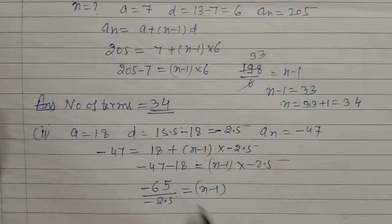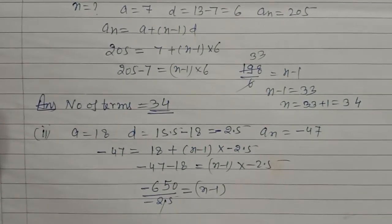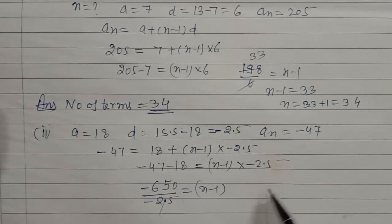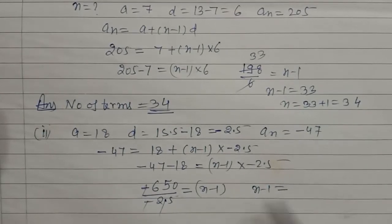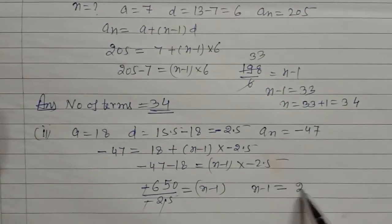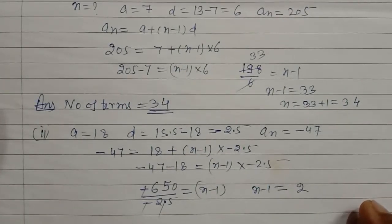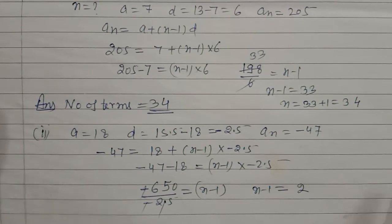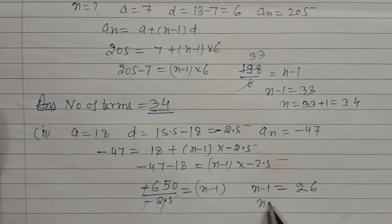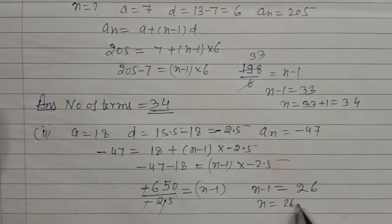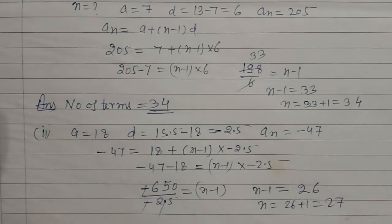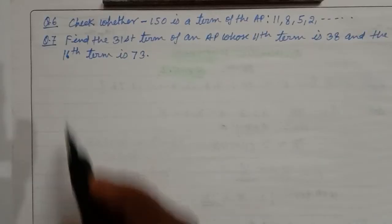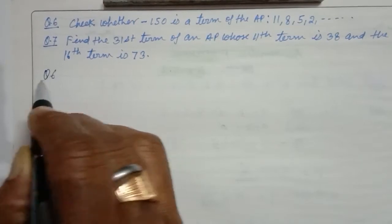Students square سے cancel کر دیجئے۔ n minus 1 is equal to 26 آجائے گا۔ تو n is equal to 26 plus 1 is equal to 27۔ Students یہ اس question کا answer ہے۔